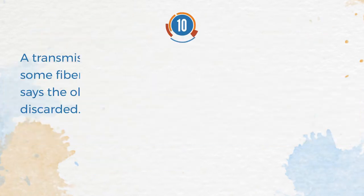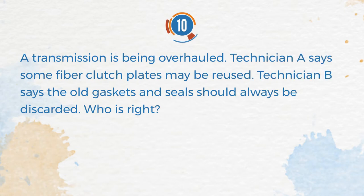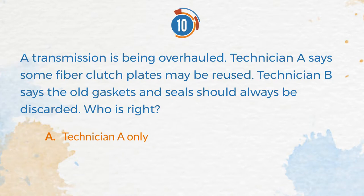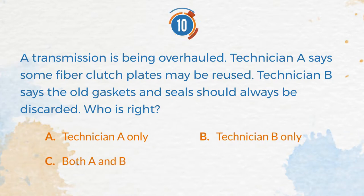Number 10. A transmission is being overhauled. Technician A says some fiber clutch plates may be reused. Technician B says the old gaskets and seals should always be discarded. Who is right? A. Technician A only. B. Technician B only. C. Both A and B. D. Neither A nor B.